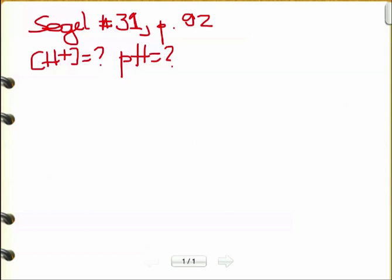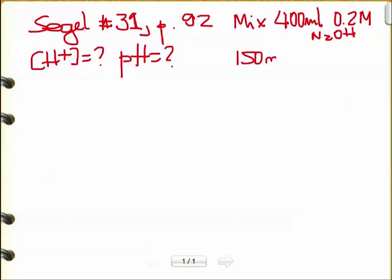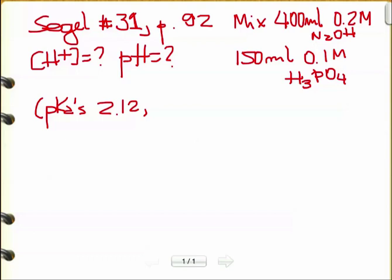We want the hydrogen concentration and pH. This is a mixing problem. We're mixing 400 milliliters of 0.2 molar sodium hydroxide and 150 milliliters of 0.1 molar phosphoric acid. The problem gives the pKa values for phosphoric acid: the first one is 2.12, the second one is 7.21, and the third one is 12.32.